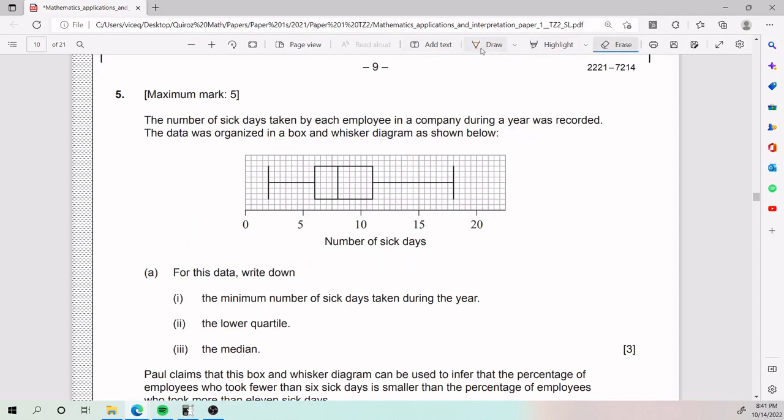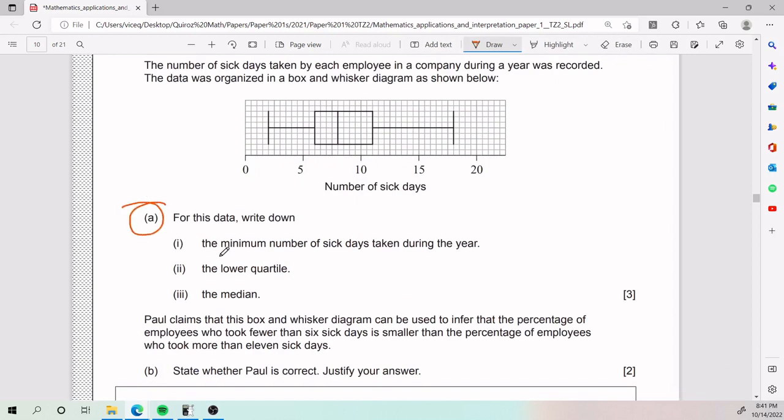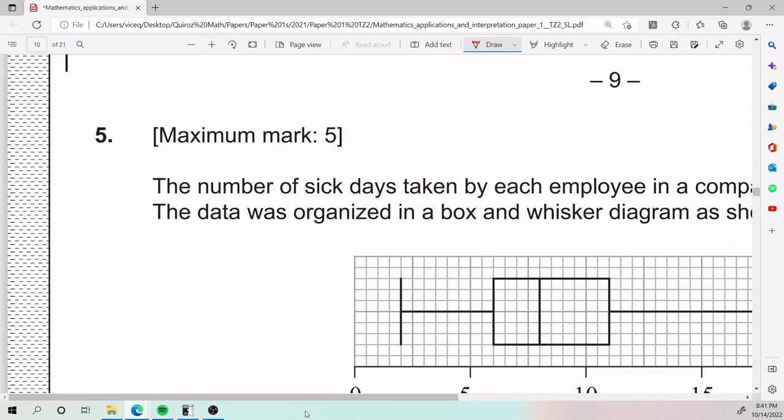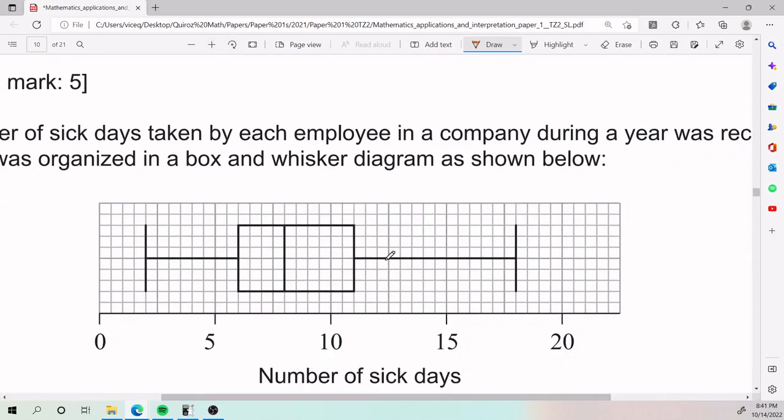This guy right there. So for part A, the entirety of part A, they ask us for minimum, lower quartile, and median in terms of sick days. So part A is really asking you, do you know how to read a box and whisker diagram?